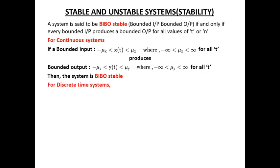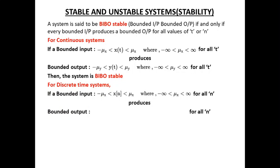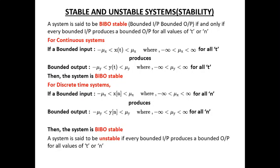The same definition extends to discrete time: x(n) is bounded between −μx and +μx, and if the system produces a bounded output y(n) for all n, the system is stable. A system is unstable if every bounded input produces an unbounded output.